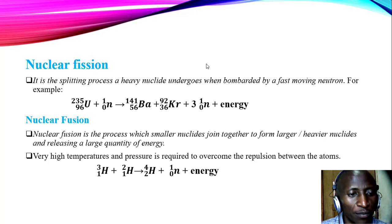In nuclear fusion, which is the opposite of fission, in this process, smaller nucleates join together, they combine to form larger or heavier nucleates, releasing a large quantity of energy. For example, before we go to the example we look at, high temperatures and pressure are required to overcome the repulsion between the atoms. In our example which we have shown there, two atoms of hydrogen combine to give 4-2, plus there is a release of one neutron and a lot of energy is released.